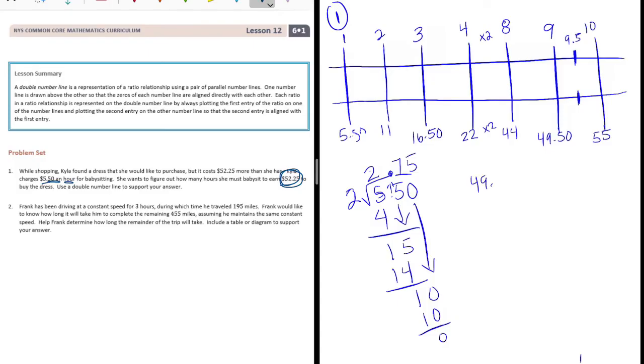We can figure out exactly what this halfway point is by adding $49.50 plus $2.75. Five plus seven is twelve, carry the one. That right here is $52.25, which is what we were looking for. So it would take nine and a half hours of babysitting to be able to buy the dress.